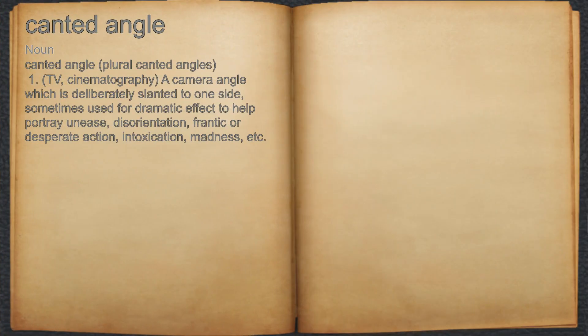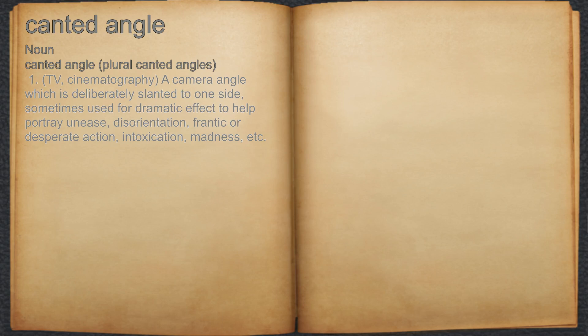Canted Angle. Noun. TV, cinematography. A camera angle which is deliberately slanted to one side, sometimes used for dramatic effect to help portray unease, disorientation, frantic or desperate action, intoxication, madness, etc.